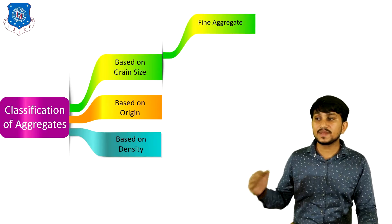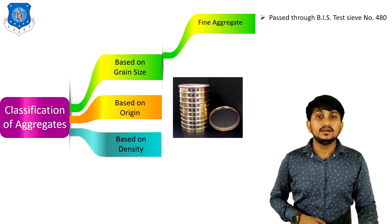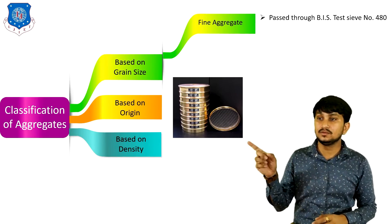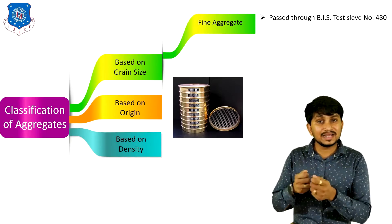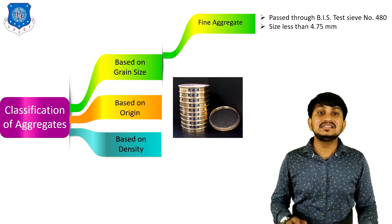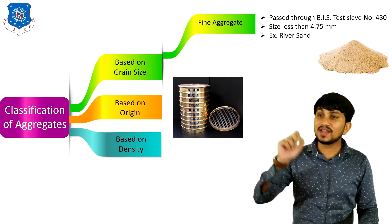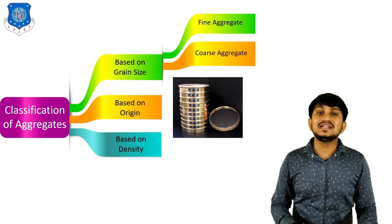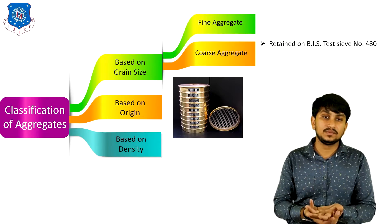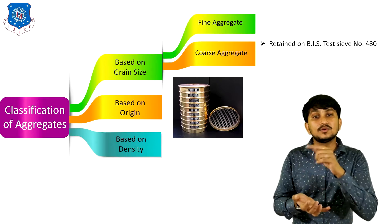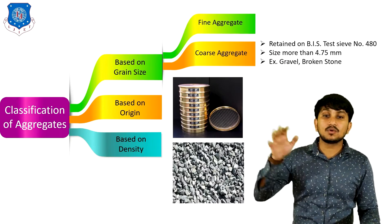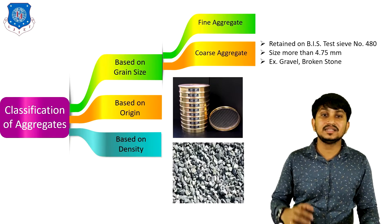Classification of aggregates based on grain size: the first type is fine aggregate. Fine aggregate is aggregate that passes through IS sieve number 480. If the aggregates pass through this sieve, they are called fine aggregate, with a size less than 4.75 mm. The second type is coarse aggregate, which is retained on IS sieve number 480. Its size is more than 4.75 mm. Examples of coarse aggregate are gravel or broken stones.